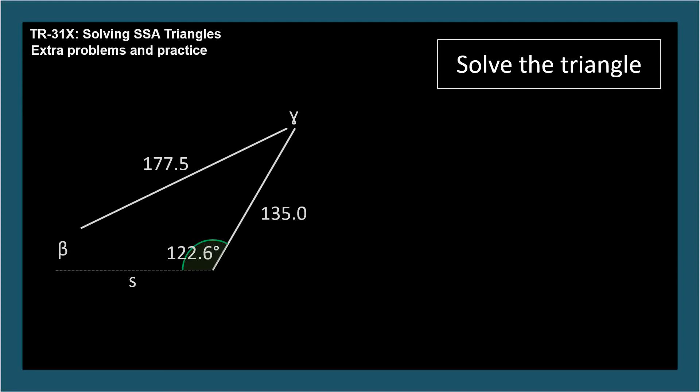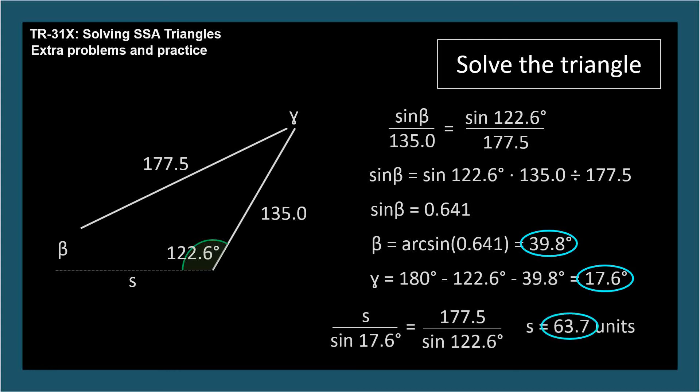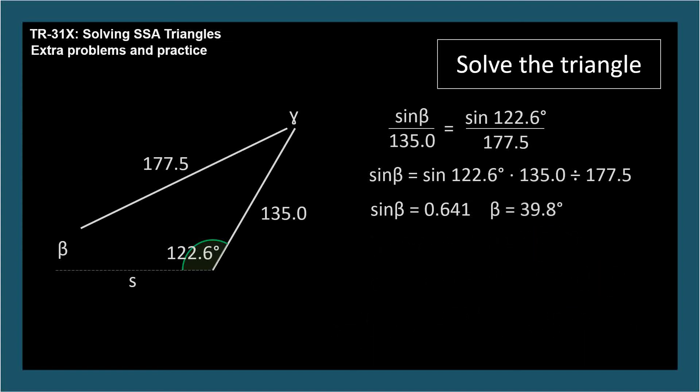But let's proceed with our problem-solving strategy and see what happens if we don't notice. As always with SSA triangles, we have an angle-side opposite pair, so we start with the law of sines to find beta. Arcsine gives us the acute angle, 39.8 degrees. Subtracting our two known angles from 180 degrees tells us angle gamma is 17.6 degrees. Using the law of sines one more time to find S gives us 63.7. The problem statement doesn't give us the units of measure, so please add a label of some sort, like units, to let your instructor know that you know the number represents a length.